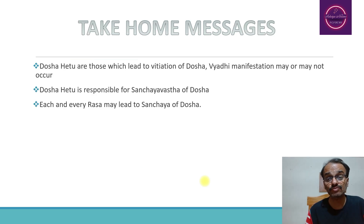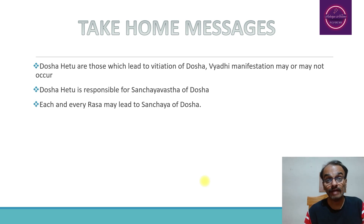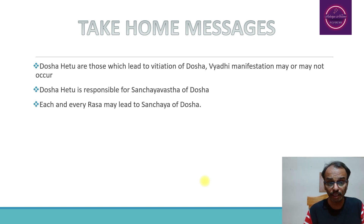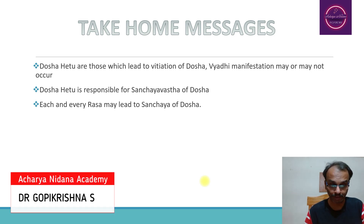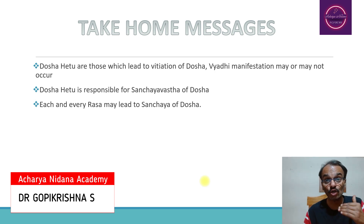The take-home messages from today's discussion are: Dosha Hetu are those which lead to the vitiation of the Dosha, but the Vyadhi manifestation may or may not occur. Dosha Hetu is responsible for the Sanchaya Avastha of the Dosha. Each and every Rasa may lead to the Sanchaya of the Dosha depending upon the quality as well as quantity of the Dosha vitiation.